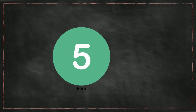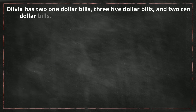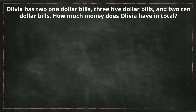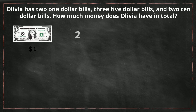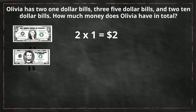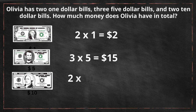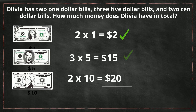Number five: Olivia has two one dollar bills, three five dollar bills, and two ten dollar bills. How much money does Olivia have in total? Two times one equals two. Three times five equals fifteen. Two times ten equals twenty. So when we total all this up: two plus fifteen plus twenty equals thirty seven dollars in total.